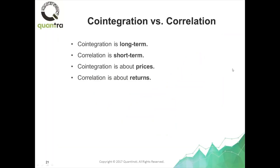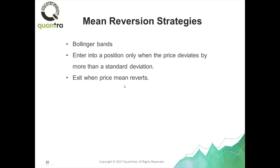To recap: cointegration is a very long-term behavior — it's looking at the long-term behavior of prices. Correlation is looking at the short-term behavior of returns. Cointegration is about price; correlation is about return.